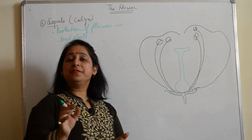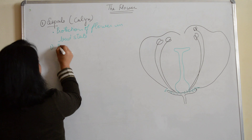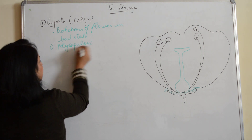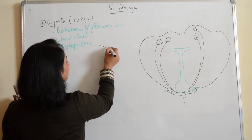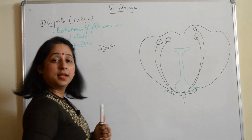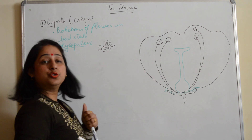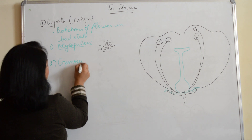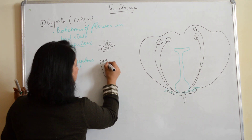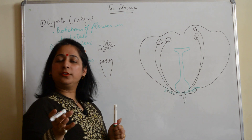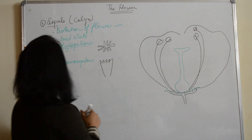There are certain conditions related to calyx. The first is the polysepalous condition, where the sepals are free — they are not attached to one another. This is the polysepalous condition. The next condition is gamosepalous, where the sepals are fused together. You must have seen this in chrysanthemum, where the sepals are fused — that is the gamosepalous condition.